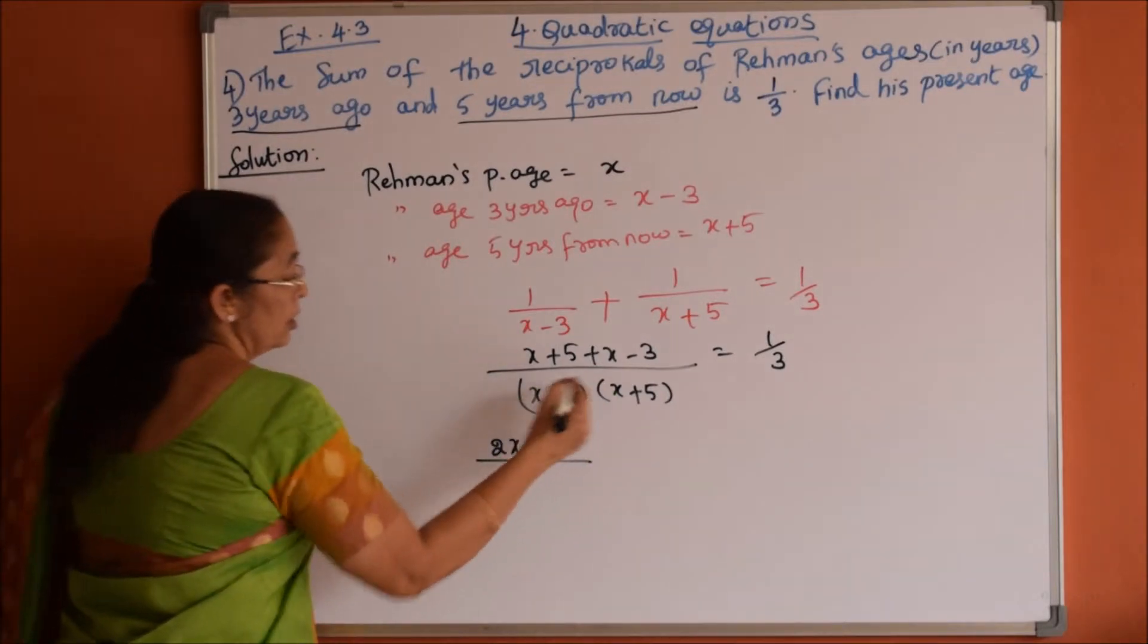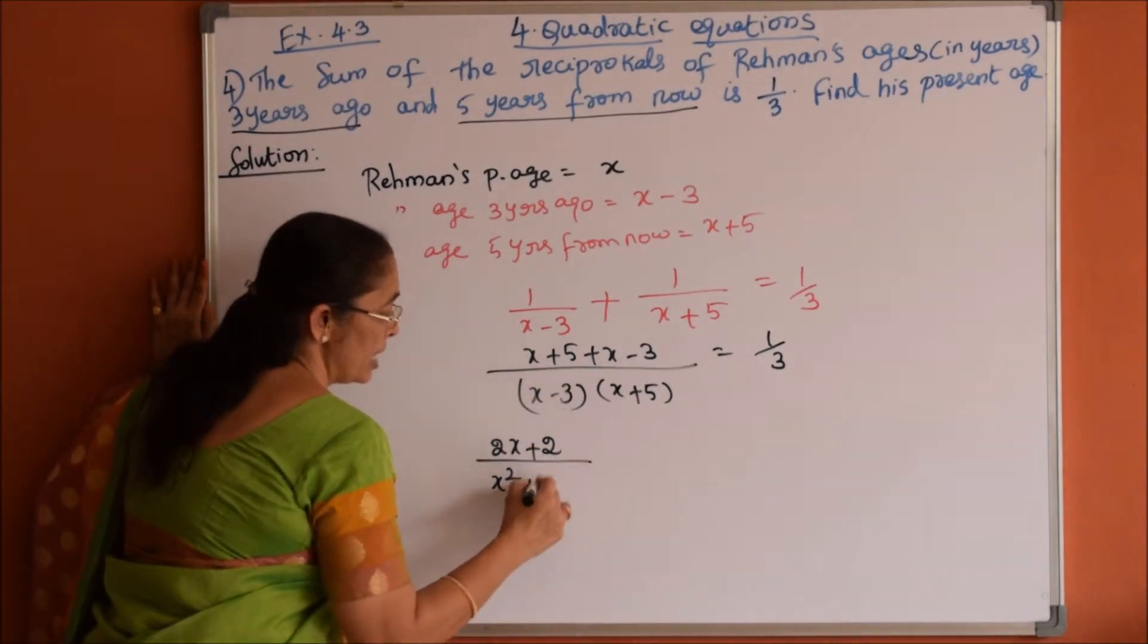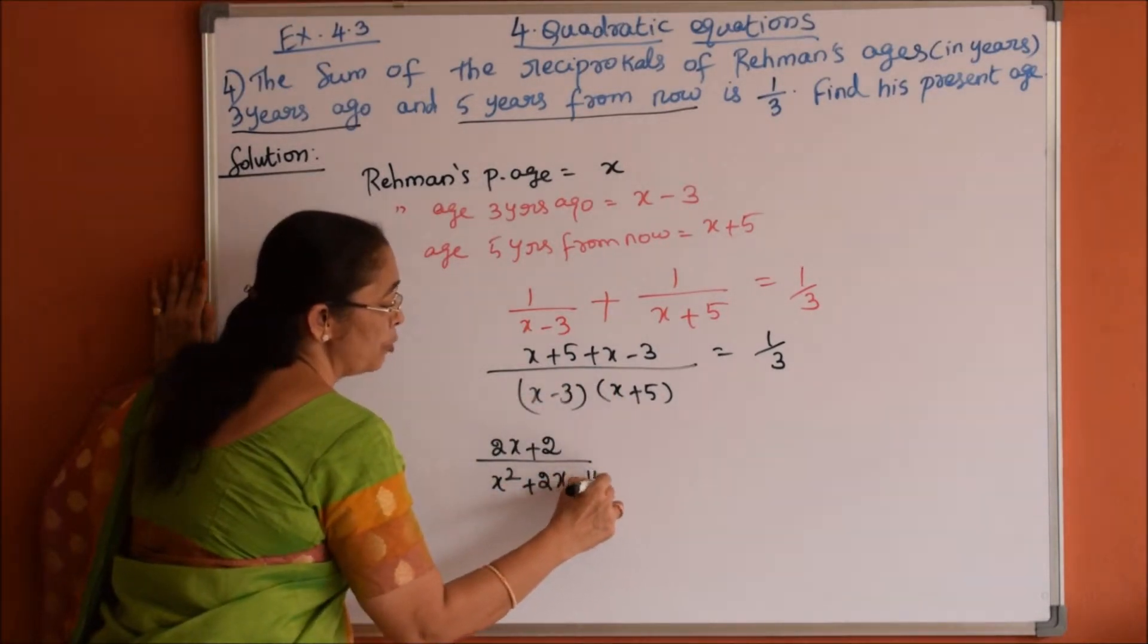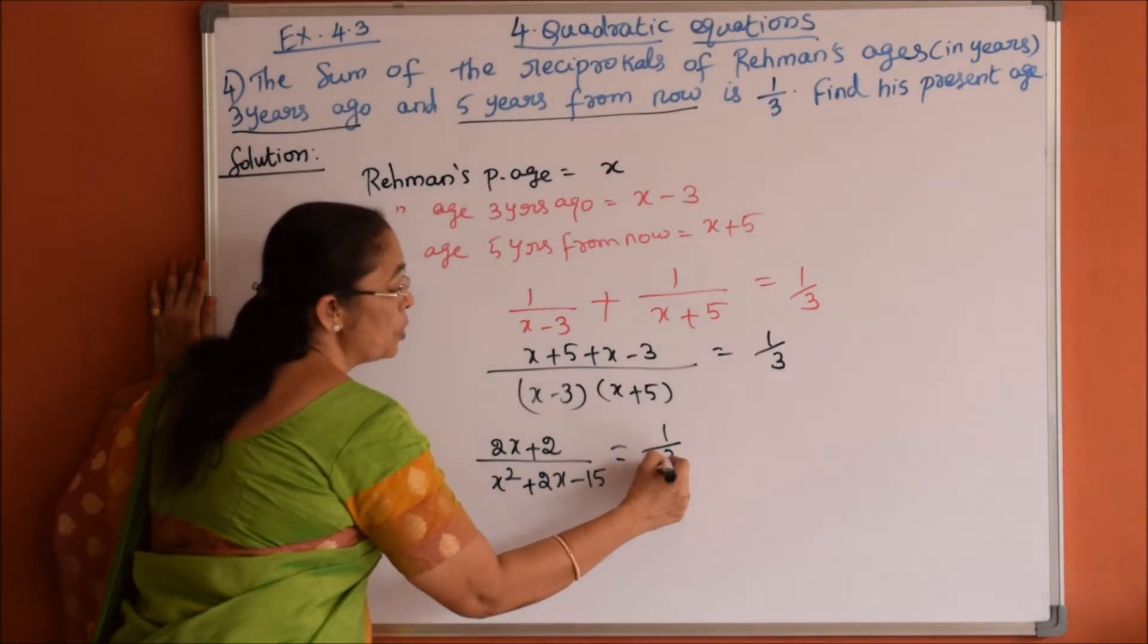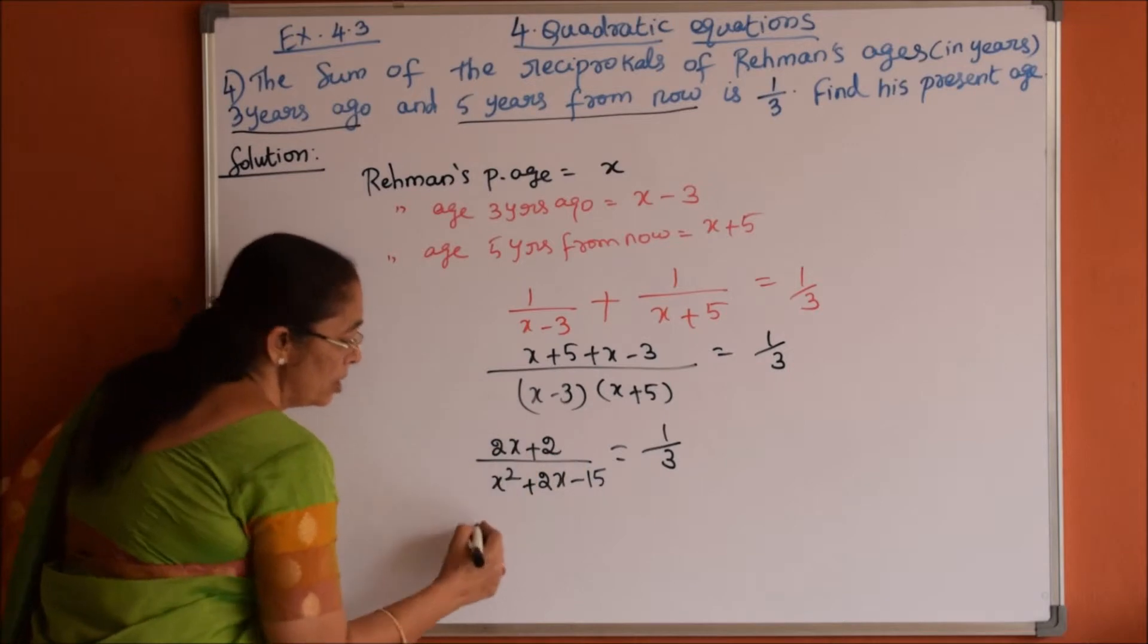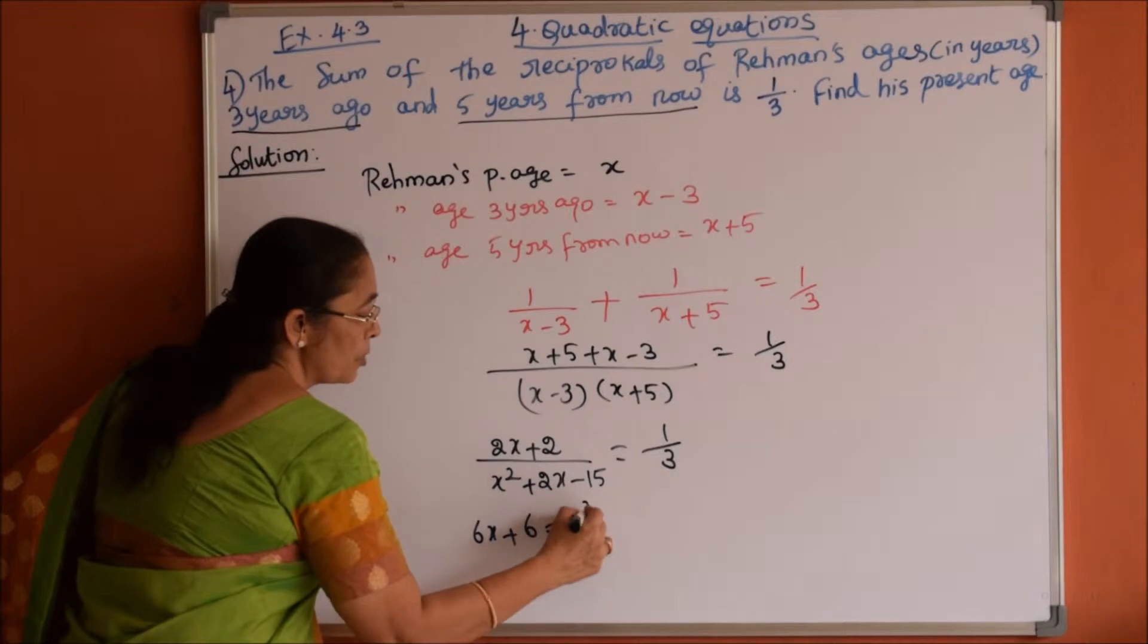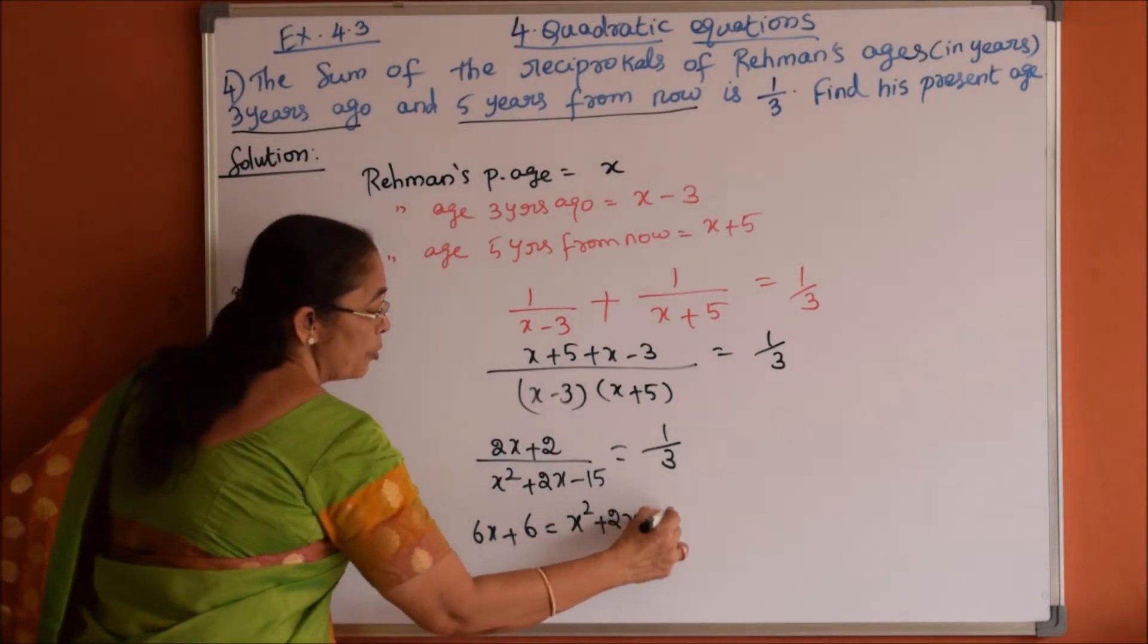Now denominator is, you can multiply x square, x square 5x minus 3x plus 2x minus 15 is equal to 1 by 3. So we cross multiply this, we will get 6x plus 6 is equals to x square plus 2x minus 15.